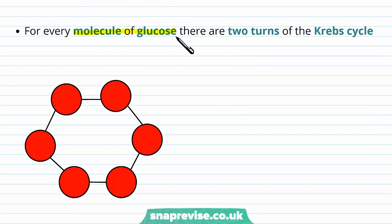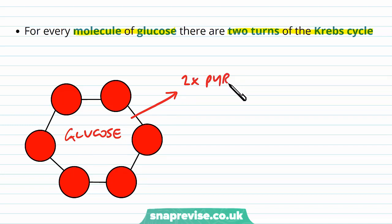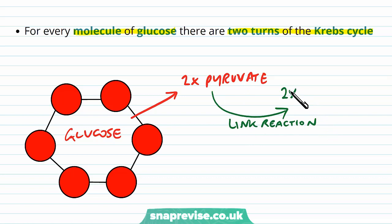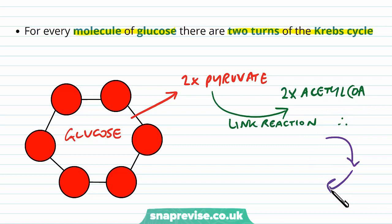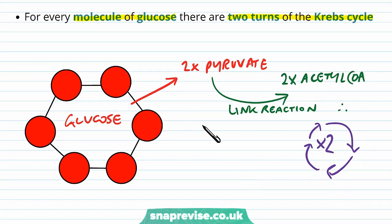For every molecule of glucose that we started with in glycolysis, there are going to be two turns of the Krebs cycle. The reason for this is that glucose made two molecules of pyruvate in glycolysis, and in the link reaction each pyruvate made an acetyl-CoA, so we have two acetyl-CoA molecules. Each acetyl-CoA goes into the cycle for it to turn once, so for each glucose molecule the Krebs cycle goes around two times.